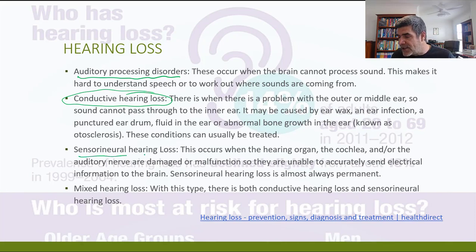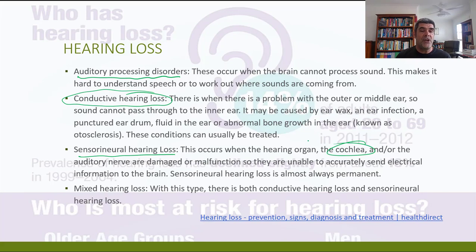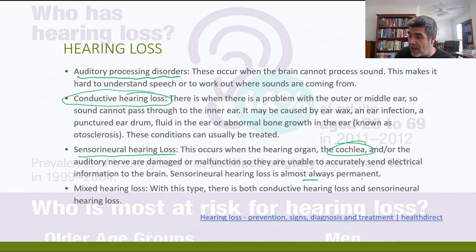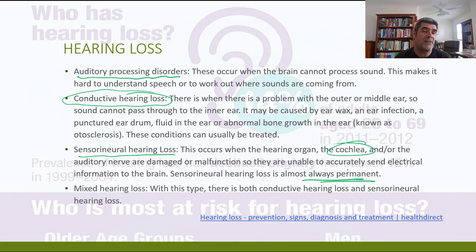Another type is sensorineural hearing loss, which occurs when the cochlea and/or the auditory nerve are damaged in some way. While all the conductive energy is flowing through and pumping fluid through the cochlea, something is going wrong at that point and it's not being passed through into the brain. This can be a quite significant and often permanent problem, not easily corrected. There can also be mixed hearing loss — combinations of conductive and sensorineural causes working together.